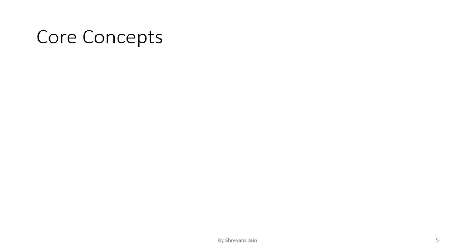Let's talk about some core concepts of Gensim. We saw that Gensim is a tool for discovering the semantic structure of documents by examining the pattern of words. Gensim accomplishes this by taking a corpus — a collection of text documents. Using corpus, Gensim produces a vector representation of text in the corpus. This vector representation can then be used to train models. Models are different algorithms used to create different representations of data, and this data is more semantic in nature. These three core concepts — corpus, vector, and model — are key to understanding how Gensim works.